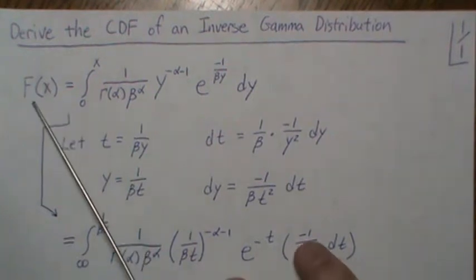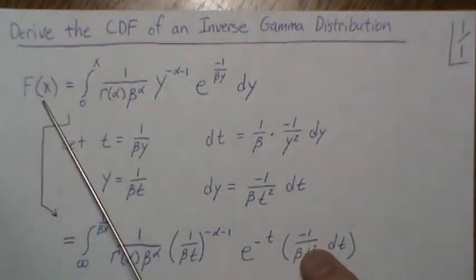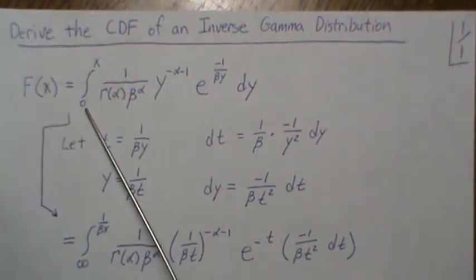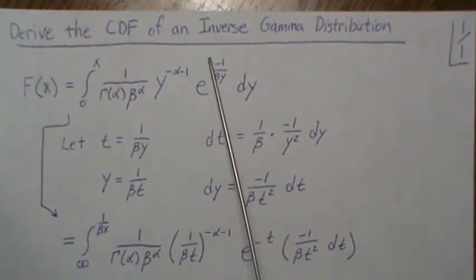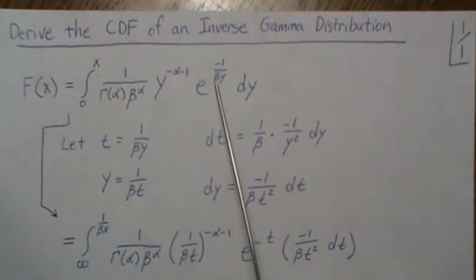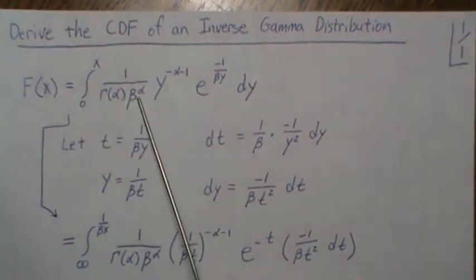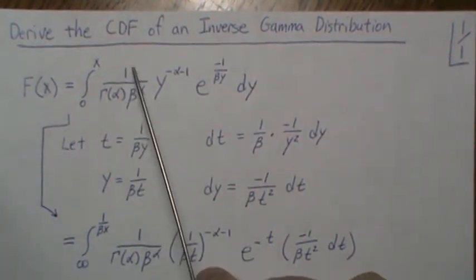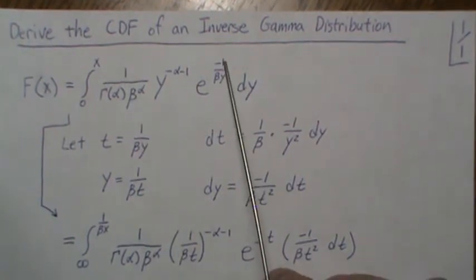So here the CDF we'll call F of X, capital F of X, which we're integrating from 0 to X of the inverse gamma distribution. One note here is that beta is in the denominator, and some people have the beta in the numerator.